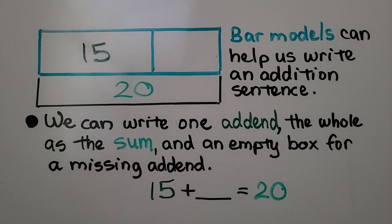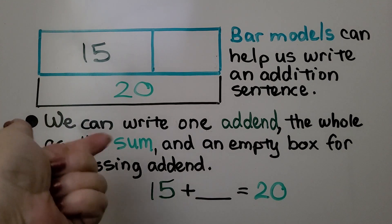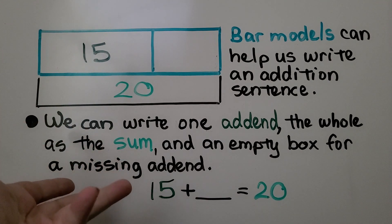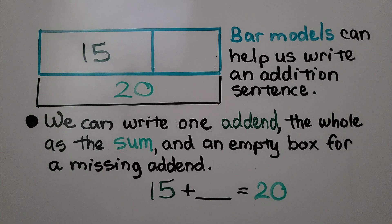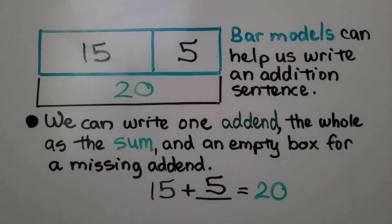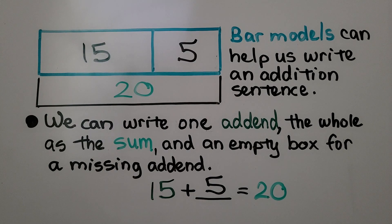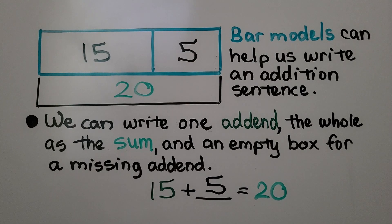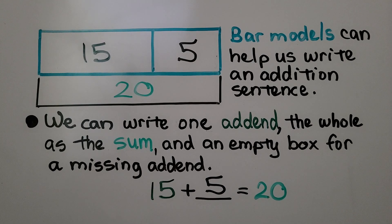Do you know what that would be? We can count on from 15, 16, 17, 18, 19, 20. That would be 5. 15 plus 5 is equal to 20. The bar model helped us to write the addition sentence so we could solve it.